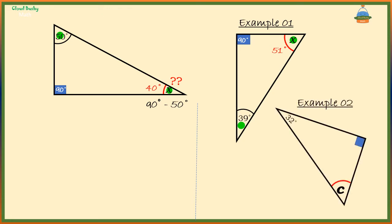Another example. Suppose this angle is 32 degrees and we want to find c. c is surely equal to 90 minus 32 degrees which is 58 degrees.